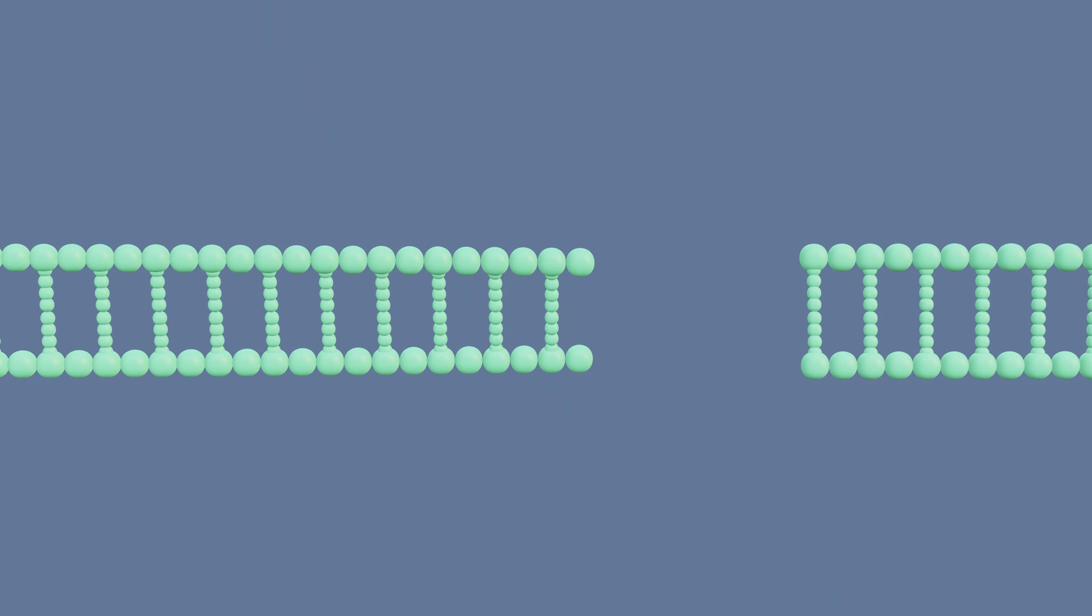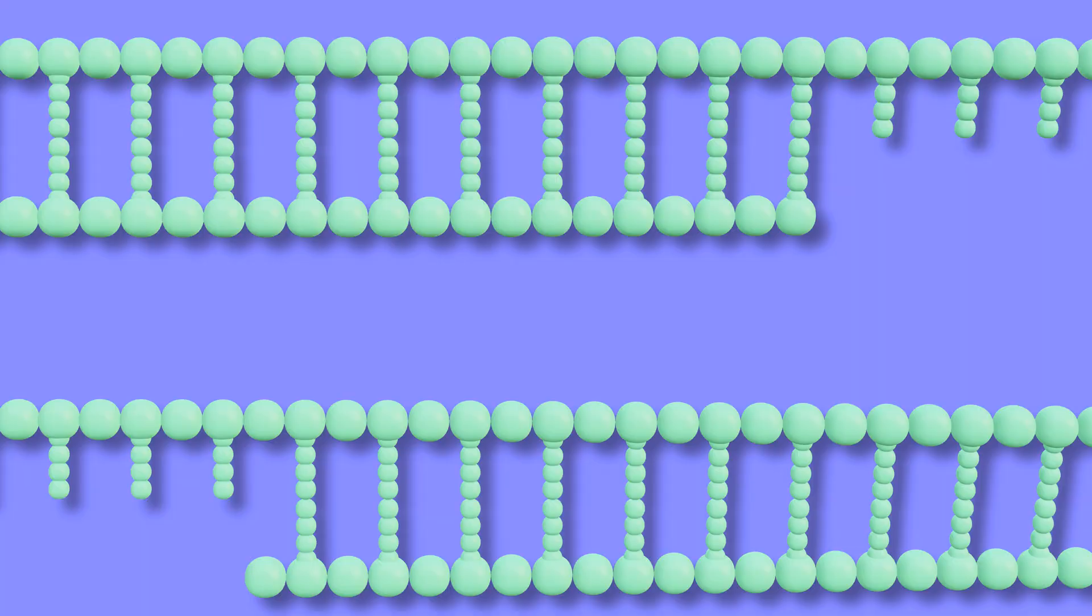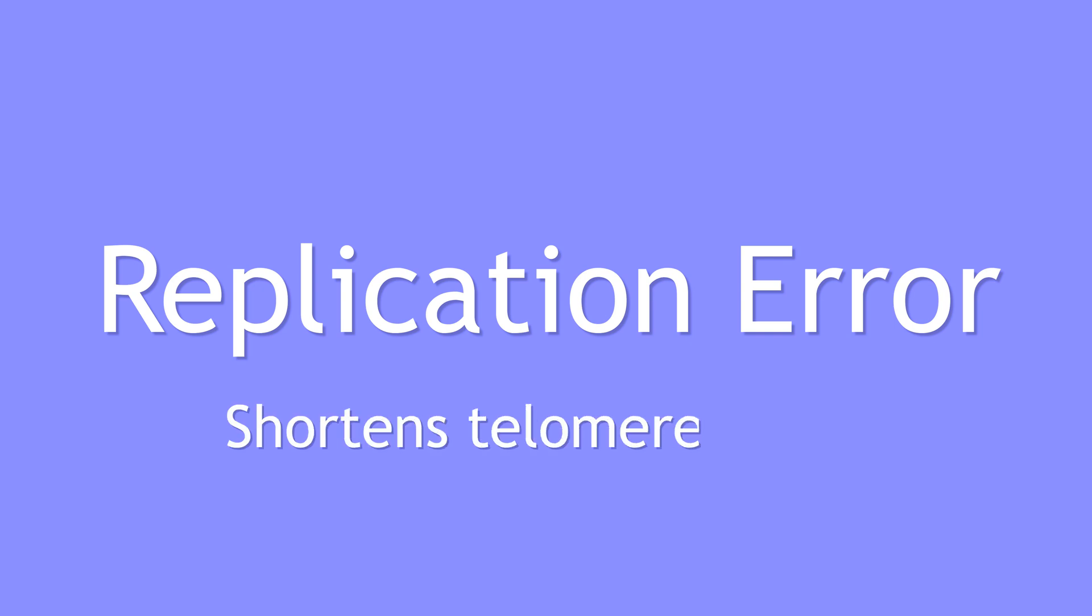Before cells divide, their DNA needs to be replicated by DNA polymerase and initiated with the help of RNA primers. But the replication process is not perfect. Sections of the primer binding site never gets copied, resulting in a replication error and shortening the ends of our telomeres.